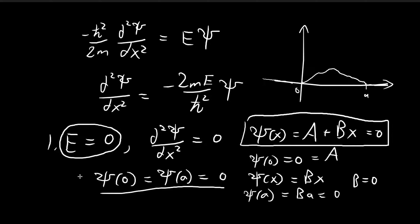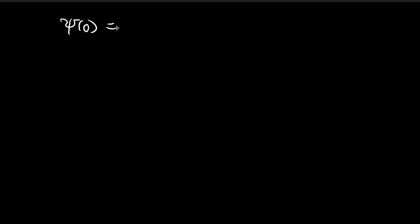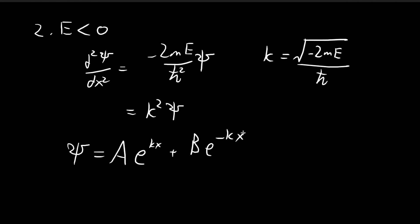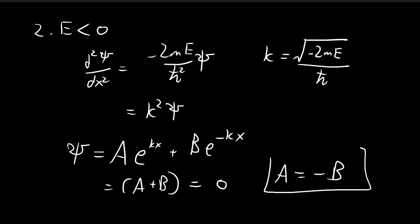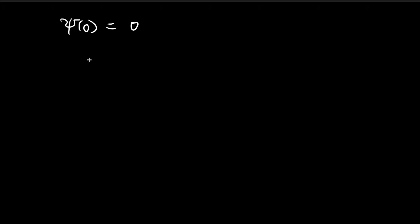We need to make sure that psi of x satisfies the boundary conditions so our solution is continuous everywhere. The first requirement is psi of zero equals zero. Substituting zero into the expression gives A plus B equals zero, since e to the power of zero is just one. So A equals negative B.